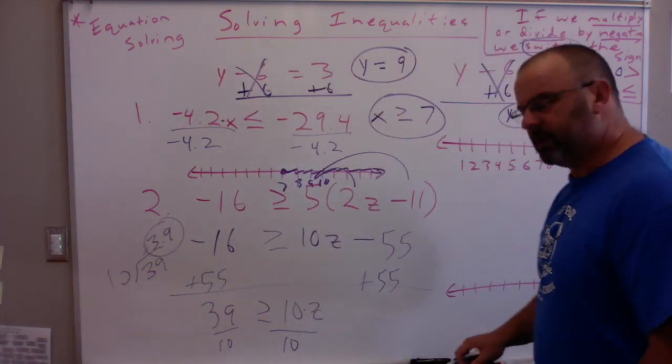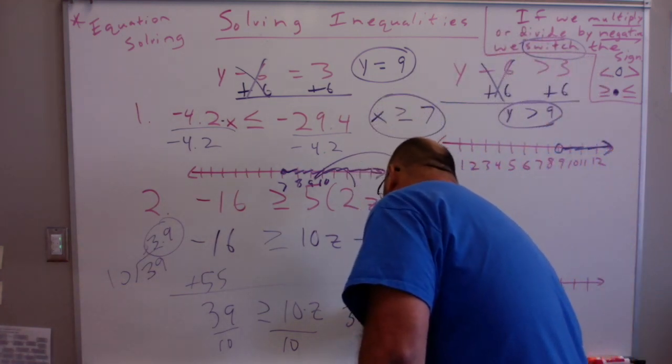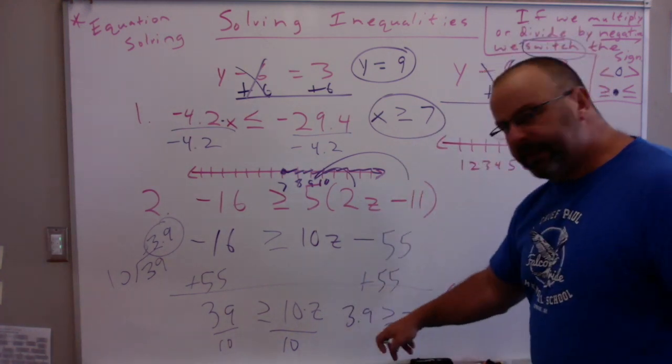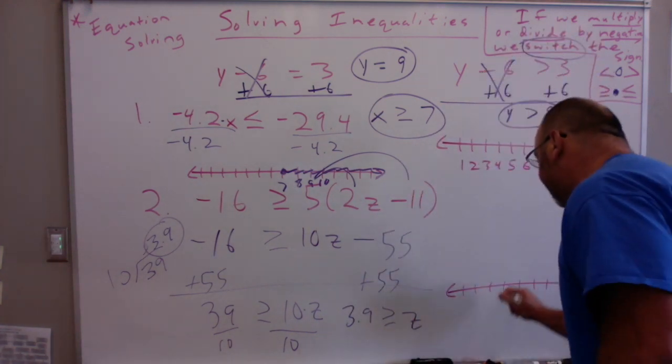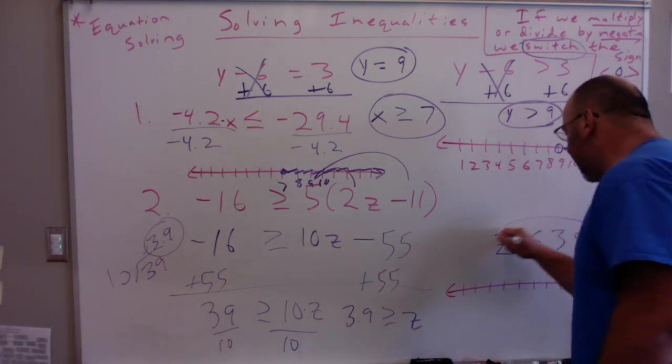You know how to divide numbers. You're in high school now. So 3.9 is greater than or equal to z. So if I rewrite this, this could be written as z is less than or equal to 3.9.